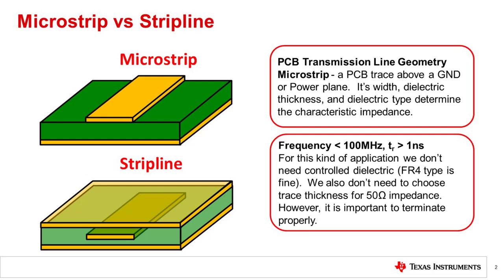The characteristic impedance of a line is the impedance seen by the wavefront traveling down the line. Impedance mismatches between the driver, transmission line, and load will cause reflections that translate into overshoot and ringing on the digital signals. The geometry of a PCB trace relative to its ground return plane will determine its characteristic impedance. In this slide you can see the microstrip and stripline configurations. The trace width, dielectric thickness, and dielectric constant can be used to calculate the characteristic impedance.